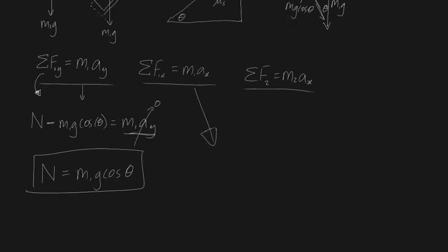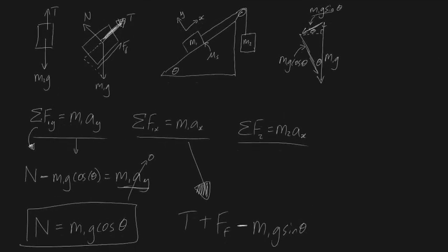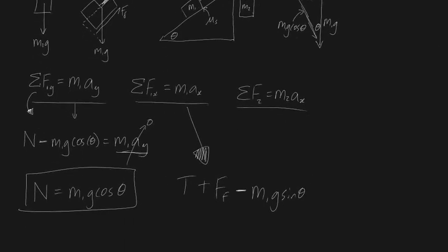Now let's analyze the x-direction forces for block one. We have our tension force T in the positive x direction, our friction force also in the positive x direction, and the component of gravity acting down the slope, which is minus m1g sinθ. So the equation is: T plus friction minus m1g sinθ equals m1ax.